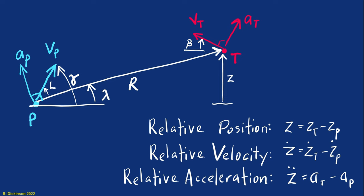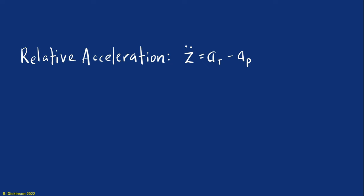Now, from the relative acceleration equation, we're going to make the assumption that the target does not maneuver. So that allows us to make AT zero, leaving just Z double dot is minus AP. AP is the pursuer acceleration. This is the control variable or the command that we send to the pursuer in order to achieve the collision.